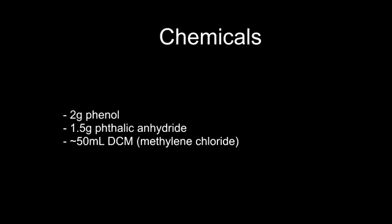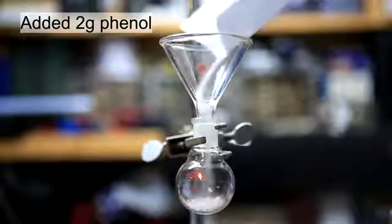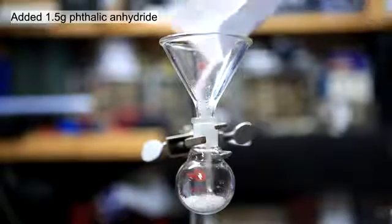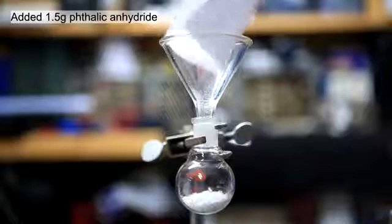As a side note, in previous videos I've shown how all three of these chemicals can be obtained from household products. 2g of phenol was added to a 25ml round bottom flask. This was followed by the addition of 1.5g of phthalic anhydride.